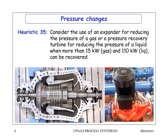Heuristic 35: consider using an expander for reducing the pressure of a gas, or a pressure recovery turbine for reducing the pressure of a liquid, when more than 15 kW is recoverable for gas or 100 kW for liquid. The illustration on the left is a gas expander to which a generator can be attached. If you can recover more than 15 kW from a gas being expanded, it becomes economically worthwhile. On the right is a liquid turbine: if you can recover 110 kW or more, it is worth installing a liquid turbine to recover that energy.